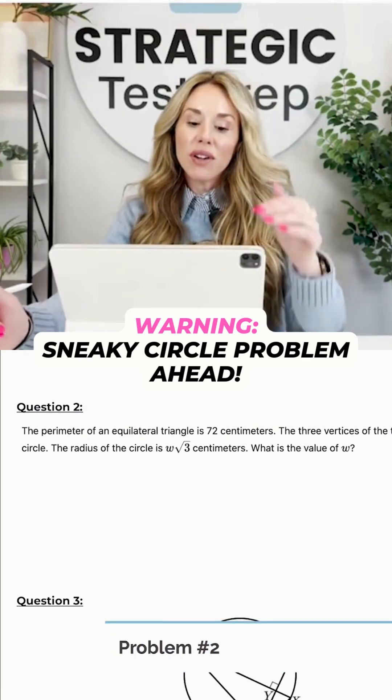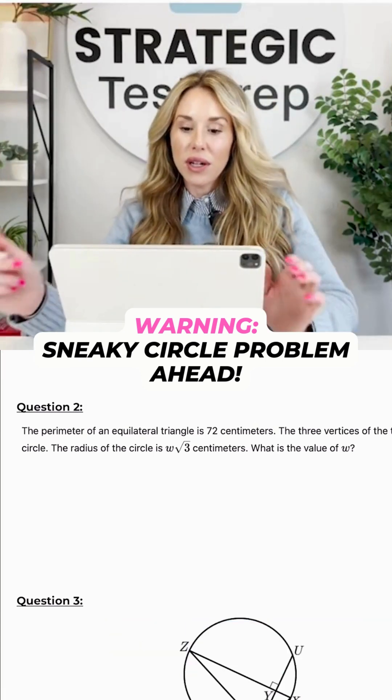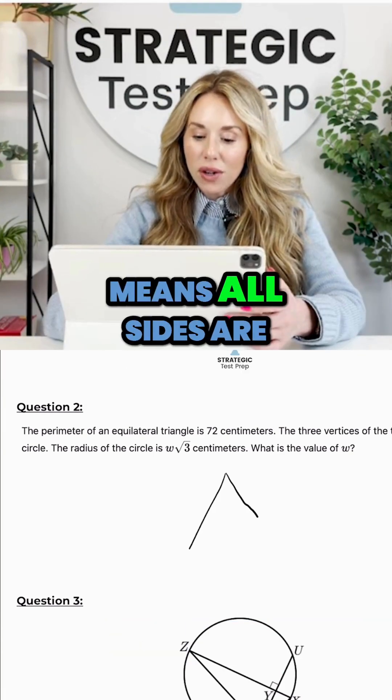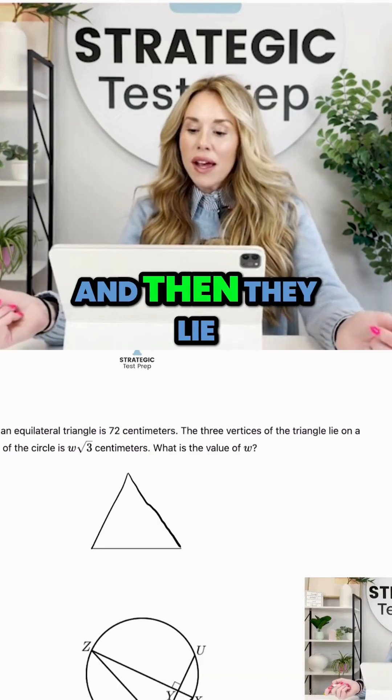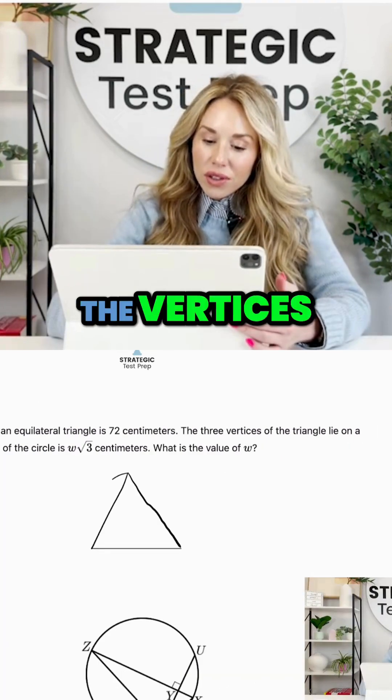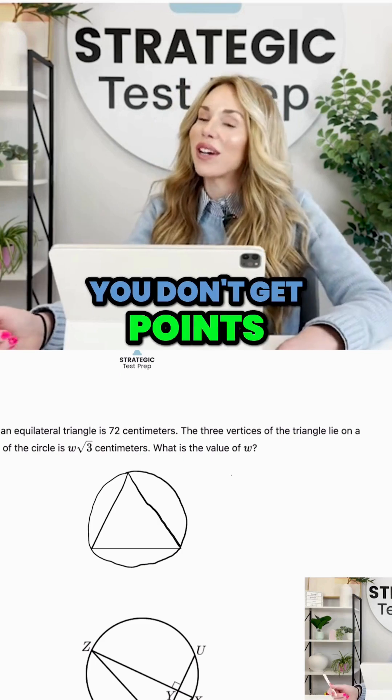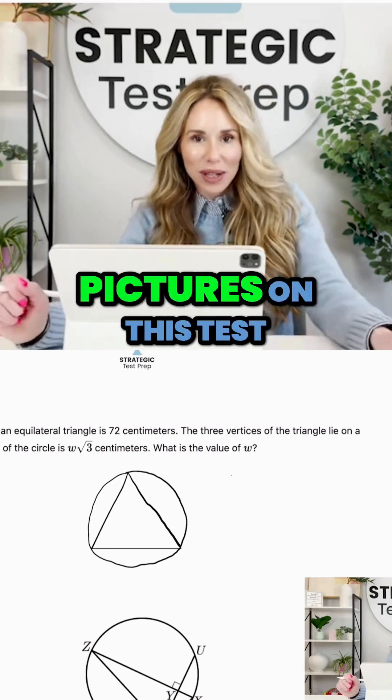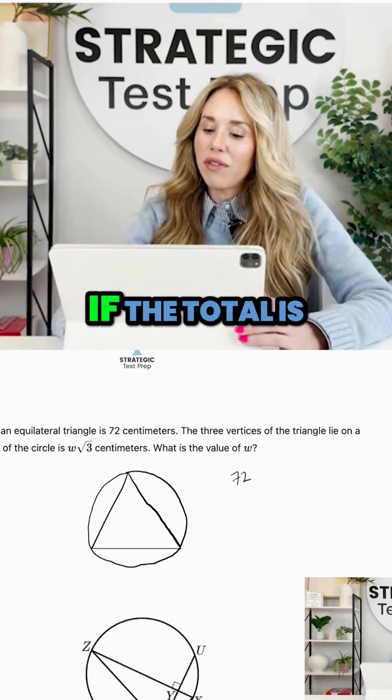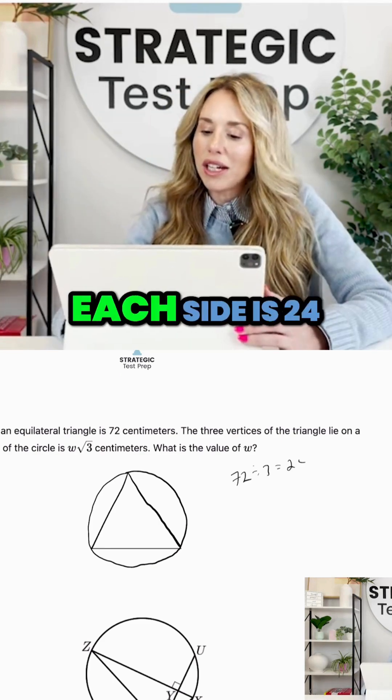All right, let's look at question two. The perimeter of an equilateral triangle is 72 centimeters. An equilateral triangle means all sides are equal to each other, and the vertices lie on a circle. Don't judge my picture, I'm doing the best I can. Fortunately, you don't get points for pretty pictures or lose points for bad pictures on this test. If the total is 72 and I divide that by three, each side is 24.